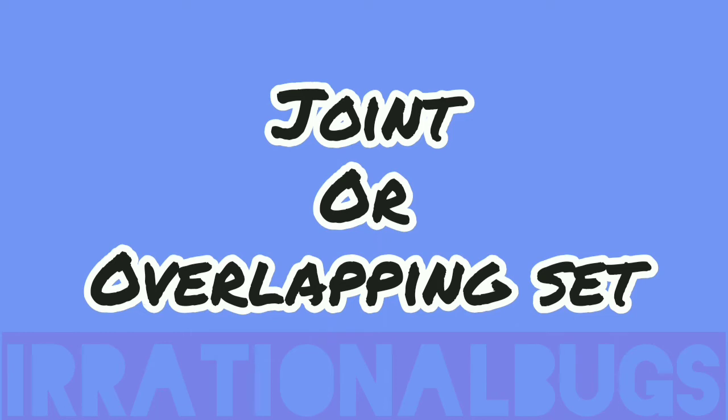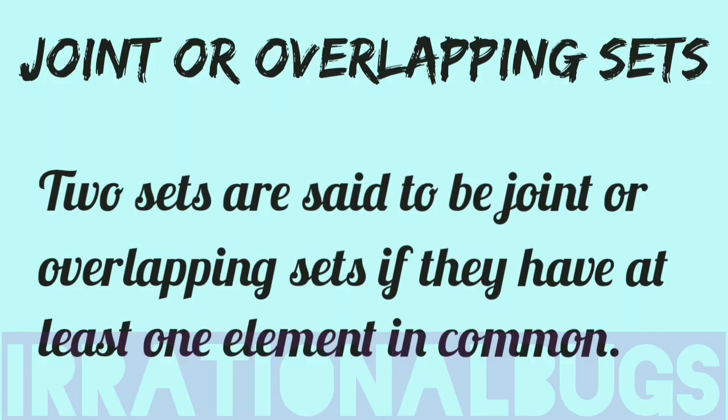Next, we have joint or overlapping sets. Two sets are said to be joint or overlapping sets if they have at least one element in common.